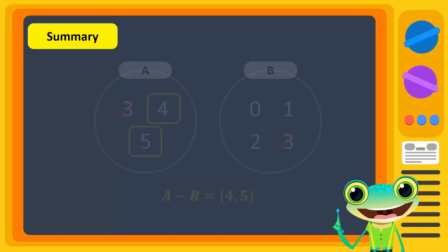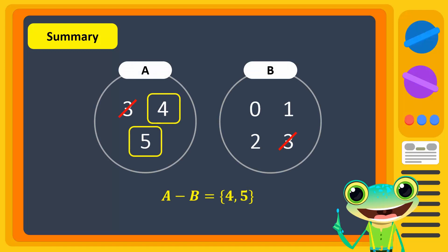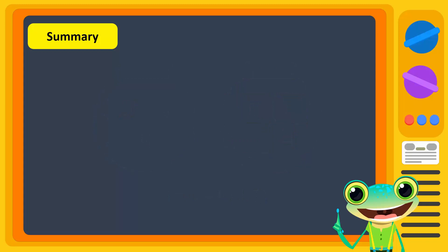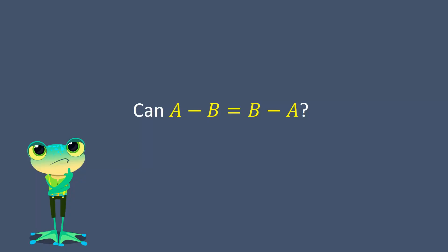To summarize, for two sets A and B: A difference B is the set of all elements of set A that are not in set B. B difference A is the set of all elements of set B that are not in set A. Generally, A difference B is not equal to B difference A. Now, are you ready for a challenge? When does A difference B equal B difference A?